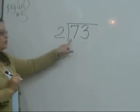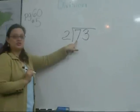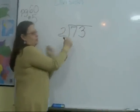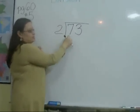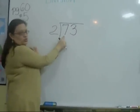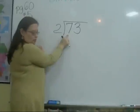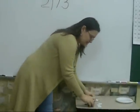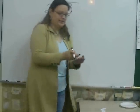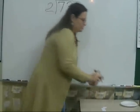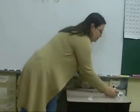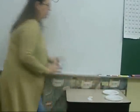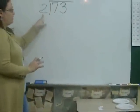We always start closest to the door. Our two friends are knocking. The 7 is closest to the door, so the 7 answers the door. He has 7 tenths to give to 2 friends.